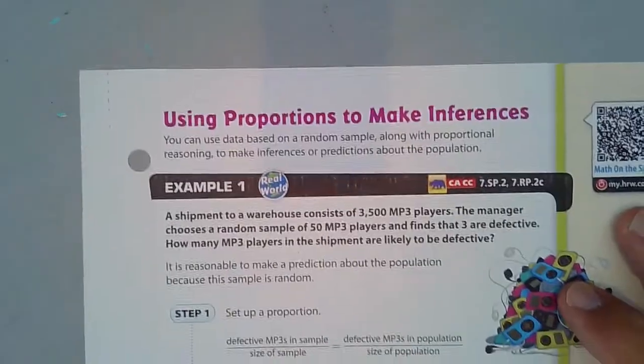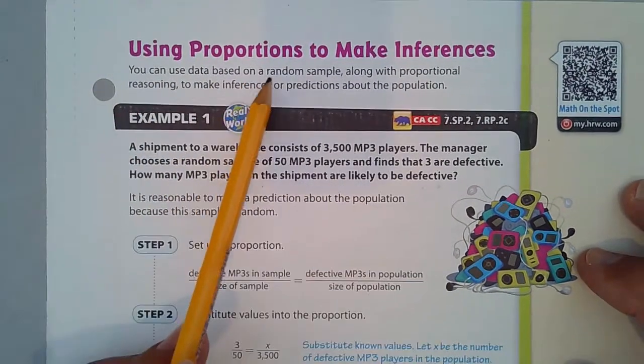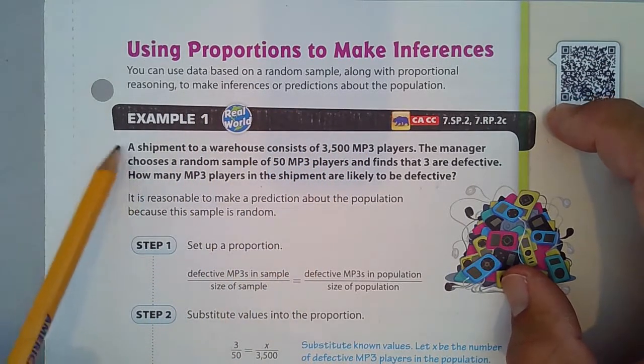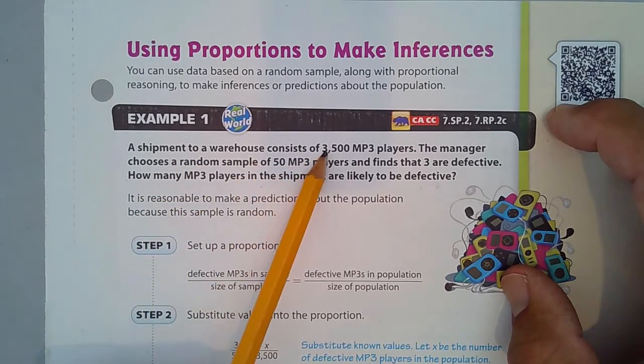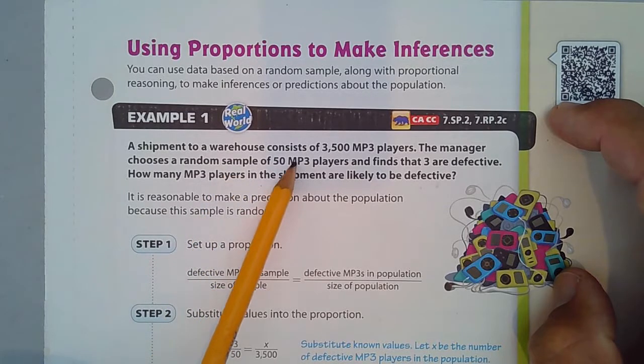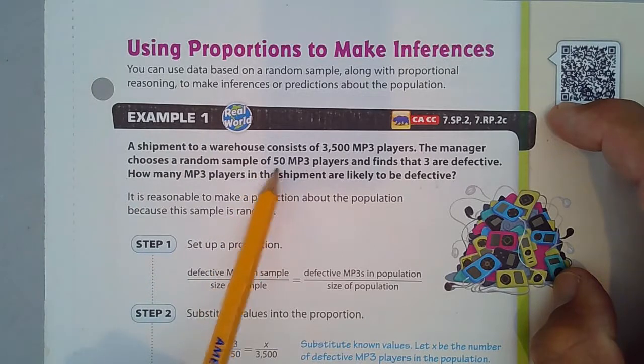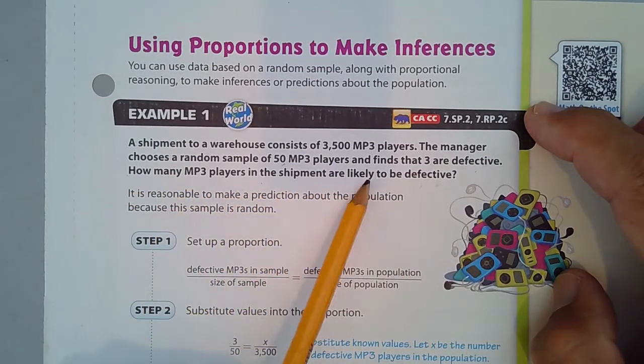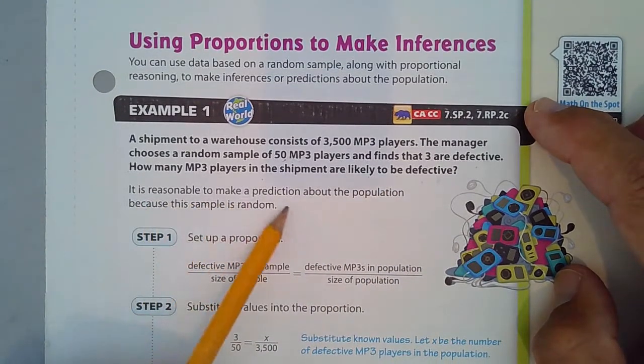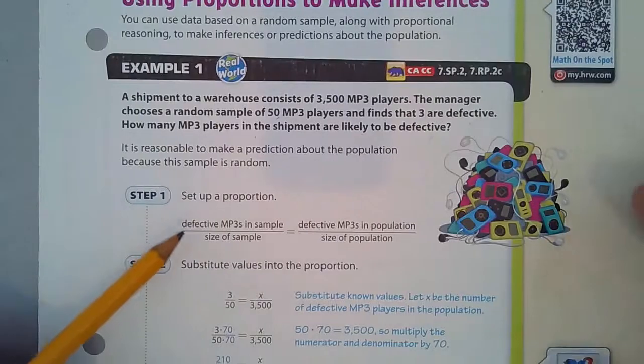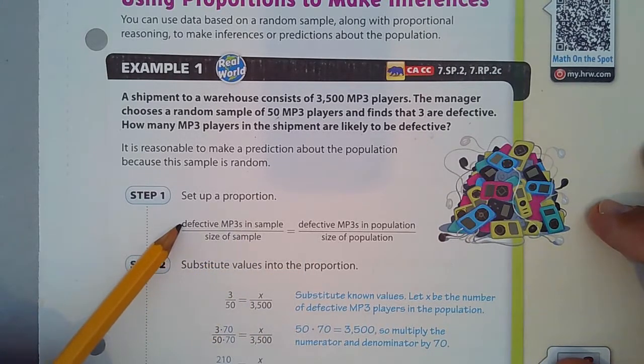Next is using proportions to make inferences. You can use data based on a random sample, along with proportional reasoning, so you're making a proportion here, two equal fractions, to make inferences or predictions about a population. In Example 1, a shipment to a warehouse consists of 3,500 MP3 players. That was before iPhones and such. The manager chooses a random sample of 50 MP3 players. MP3 players play music, if you didn't know, because that was a while ago. A manager chooses 50 at random and finds that 3 are defective. So, 3 don't work.